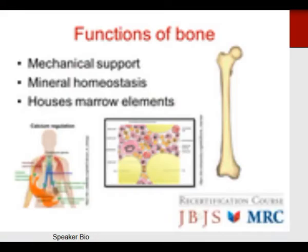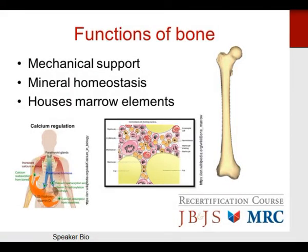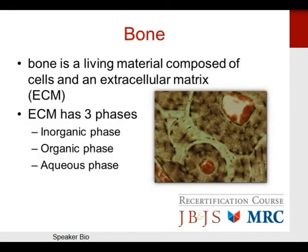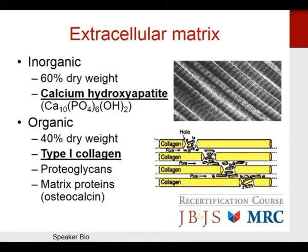We'll start with bone. Bone has several important functions — most importantly, it provides mechanical support for the skeleton, mineral homeostasis, and also houses the marrow elements. It's a living material composed of both cells as well as an extracellular matrix. The extracellular matrix has three phases: the inorganic phase, the organic phase, and the liquid or aqueous phase.